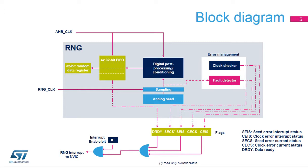The contents of the post-processing block are transferred into the data register through a four-word FIFO. The Data Ready flag (DRDY) is triggered as soon as the FIFO is full and is automatically reset when no more data can be read back from the RNG.